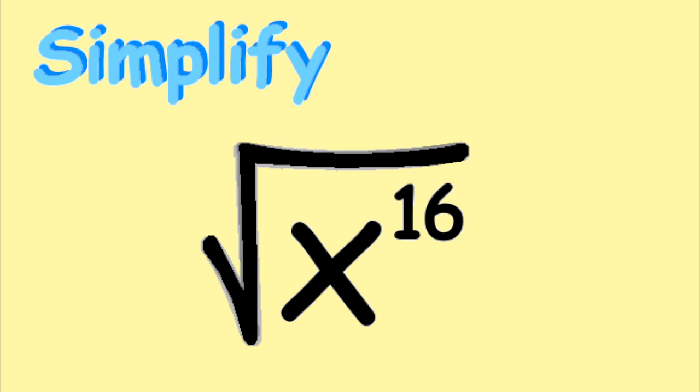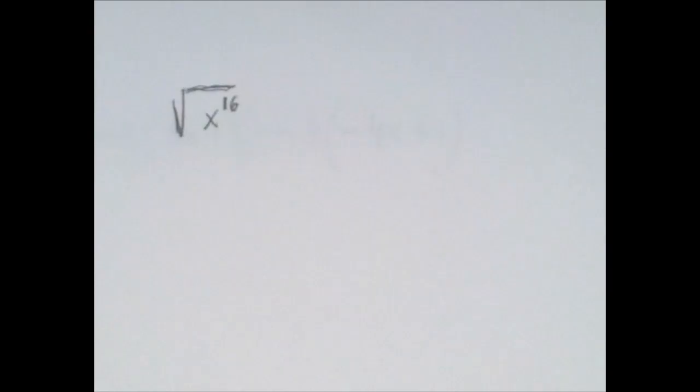So we have this expression, we have to take the square root of x to the 16th power. When we see square root and 16, we associate to 4 squared equals 16, but that is actually not what's going on.